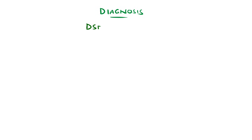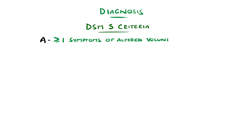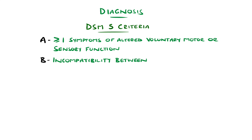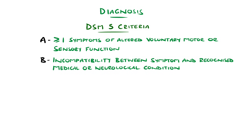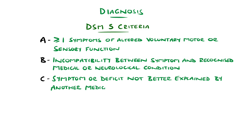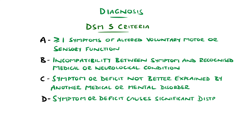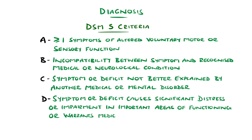To meet the DSM-5 criteria, the patient must have one or more symptoms of altered voluntary motor or sensory function; clinical findings providing evidence of incompatibility between the symptom and recognised neurological or medical conditions; the symptom or deficit is not better explained by another medical or mental disorder; and the symptom or deficit causes clinically significant distress or impairment in social, occupational, or other important areas of functioning — all of which warrants medical evaluation.